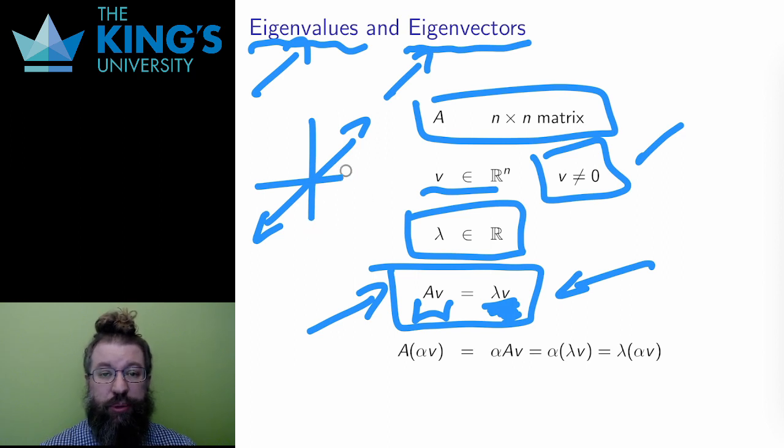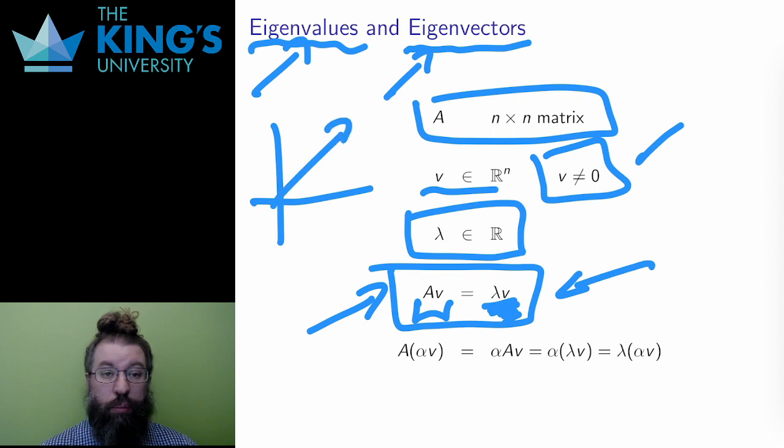And there is one last possibility. The vector V cannot be the zero vector, but the number lambda can be zero. If lambda is zero, then A sends the vector V to the zero vector. That is, V is in the kernel of the matrix A.